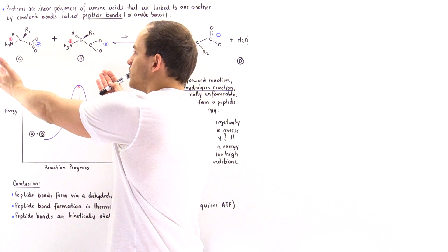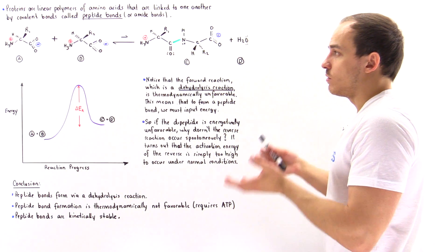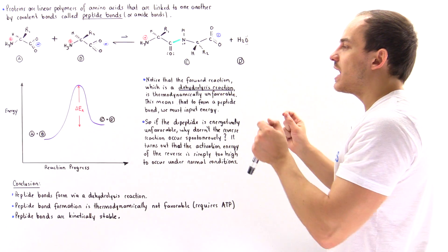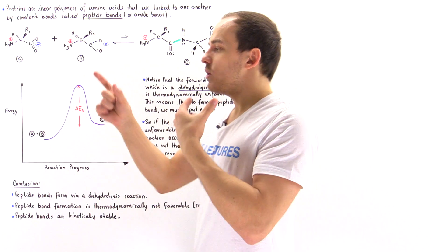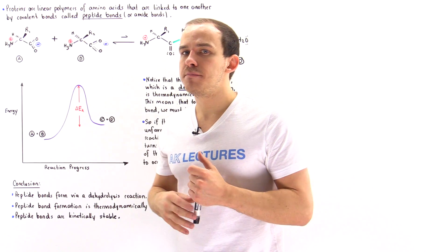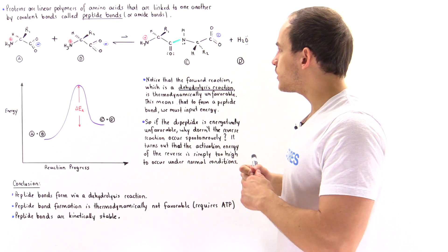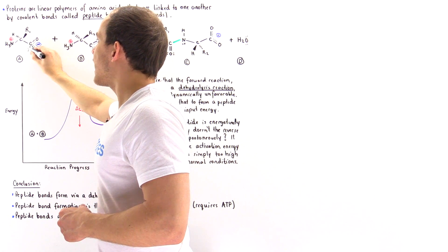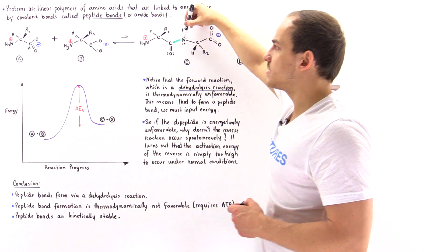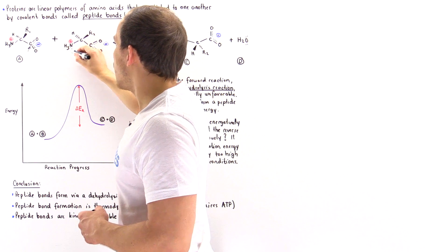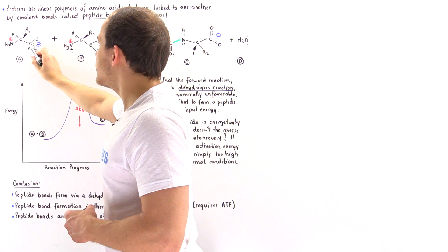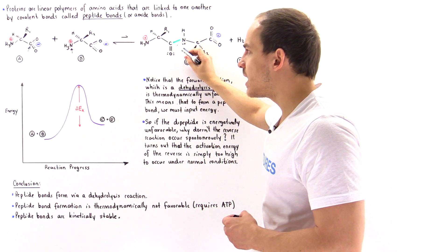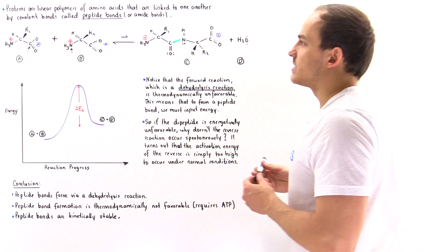Under certain conditions these two reactants will react and produce the following product. Product C is a dipeptide, which simply means we have two amino acids connected by a peptide bond shown in green. This carbon on product C is the carbon from reactant A, and this nitrogen on product C is the nitrogen from reactant B — so this carbon forms a bond with this nitrogen, and that is our peptide bond between amino acids A and B.